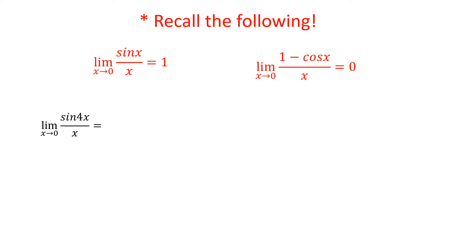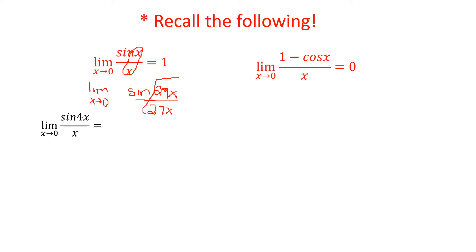This next problem has sin(4x)/x. What I need to tell you is that the property sin(x)/x can be generalized — as long as the argument inside sine and the denominator are the same, the limit equals 1. So like if I had the limit as x approaches 0 of sin(27x)/27x, as long as those two match, the answer is 1.